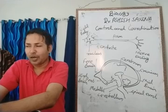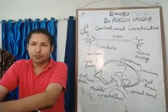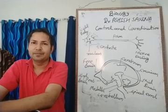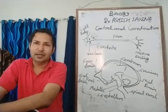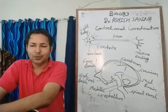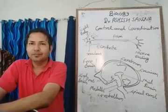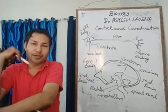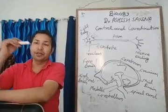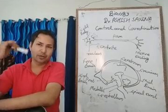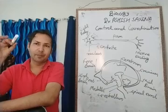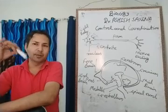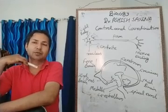Hormones regulate all body activities in a precise amount as required. Hormones are chemical messengers secreted by endocrine glands. The thyroid gland produces thyroxine hormone. Deficiency of iodine in our diet affects thyroxine hormone production. Deficiency of thyroxine hormone causes the disease called goiter.